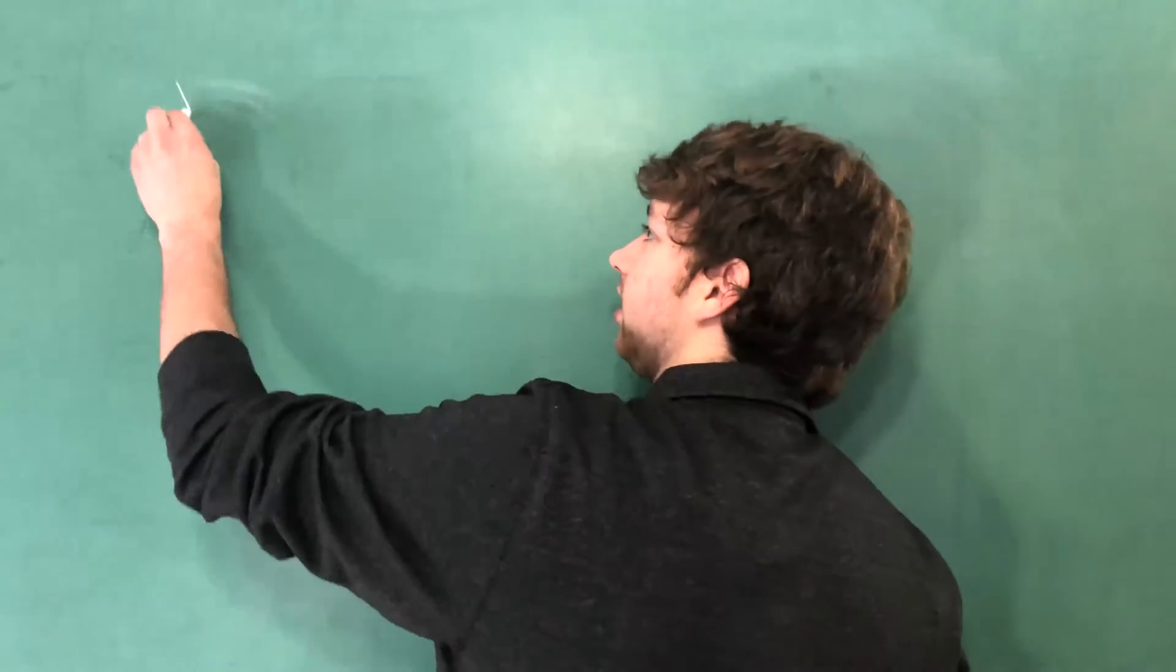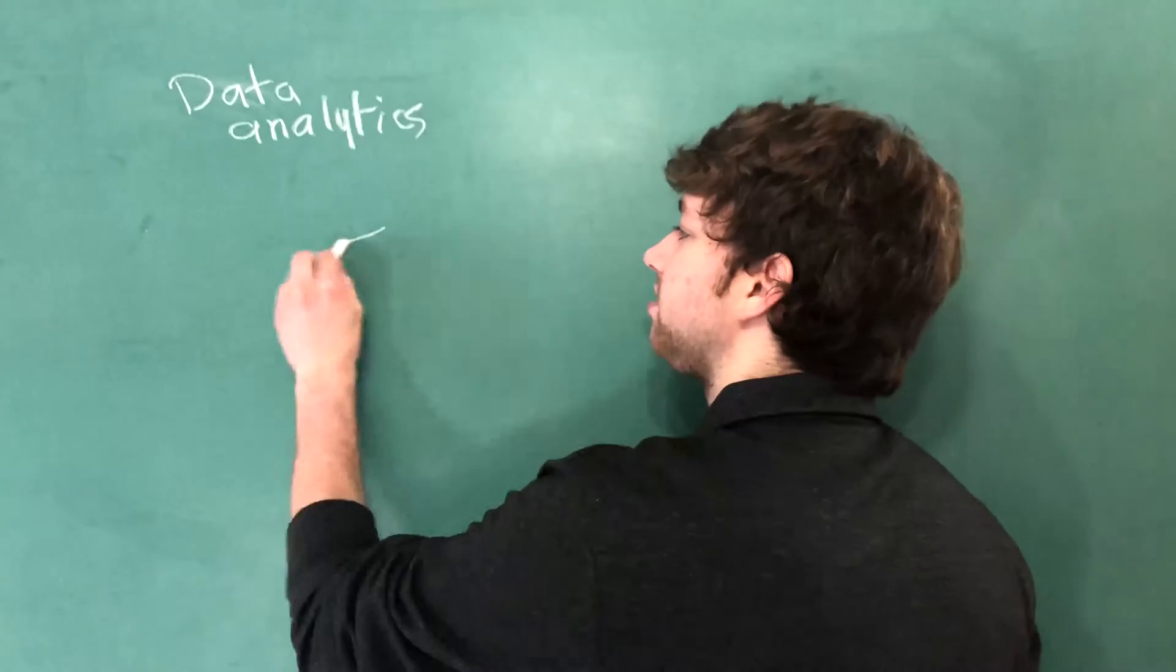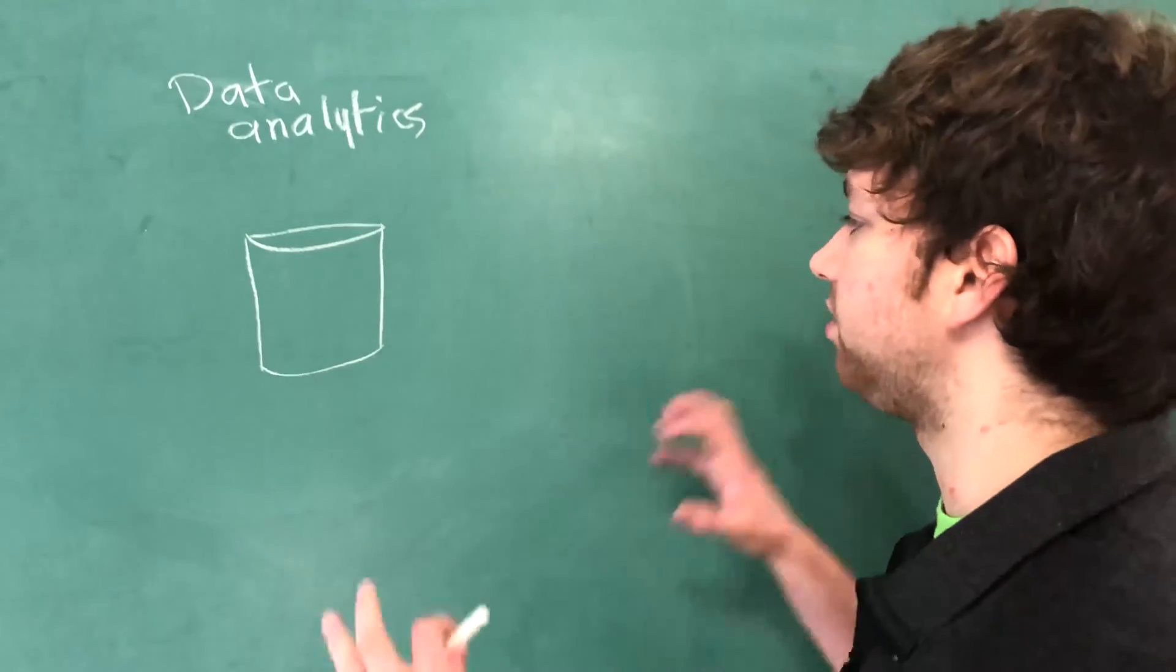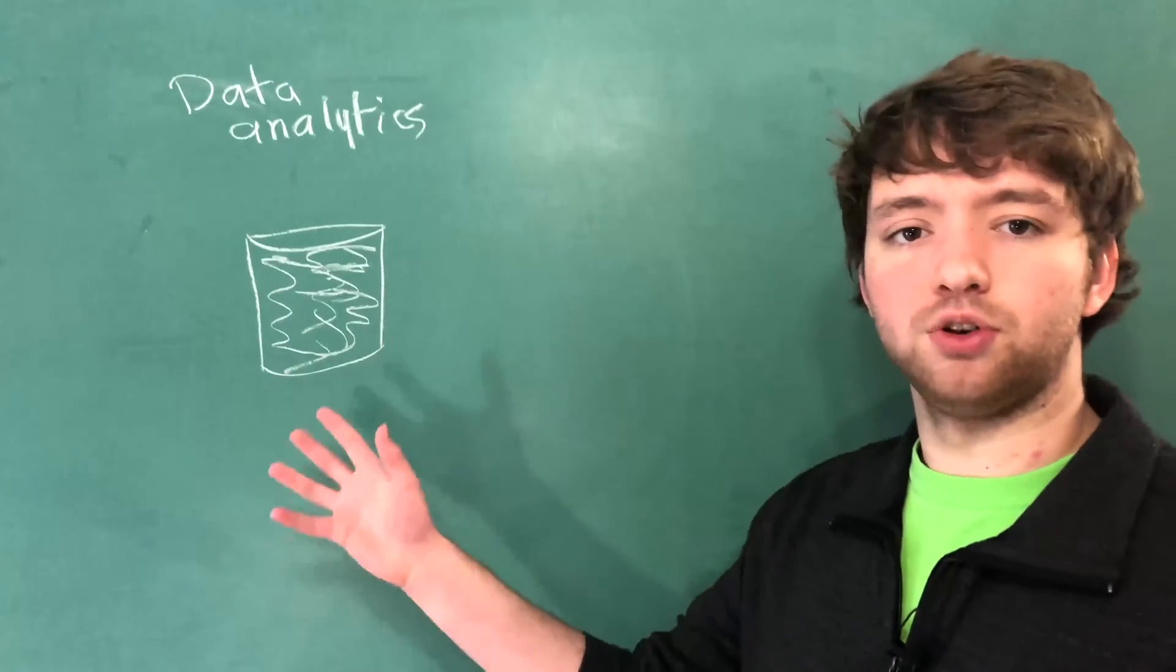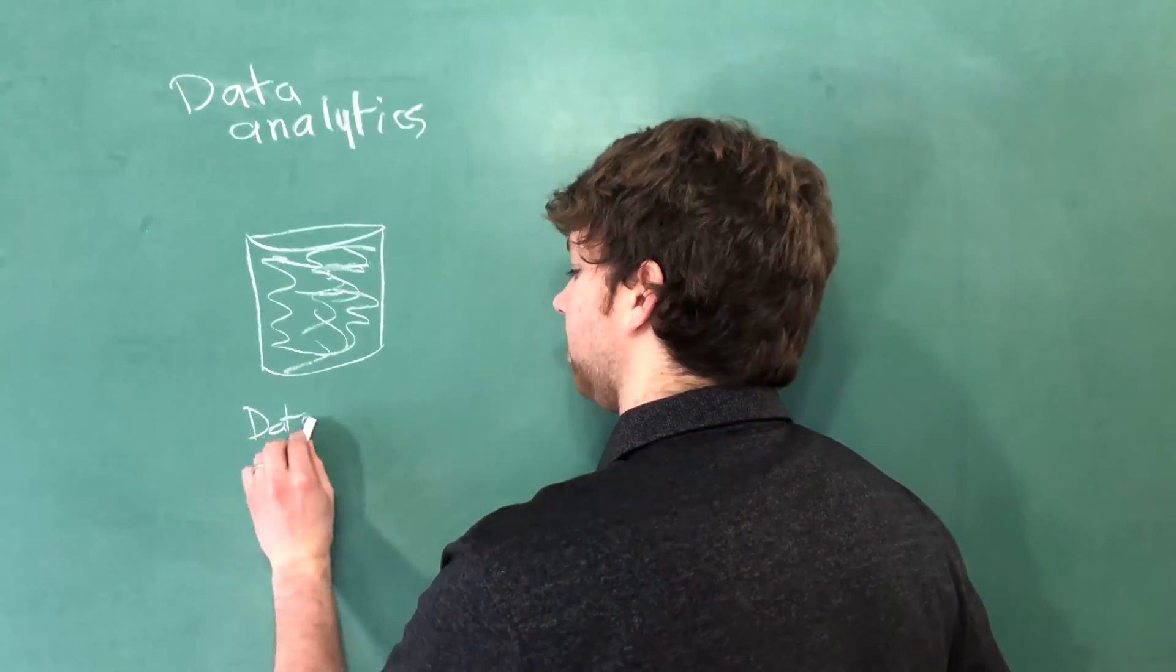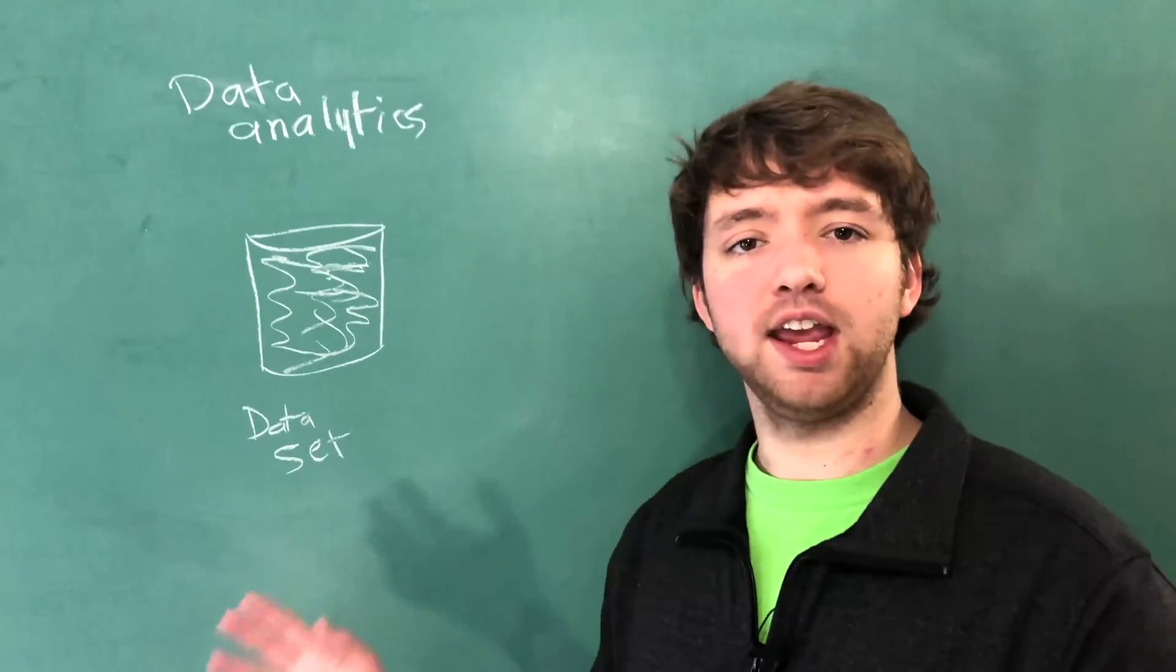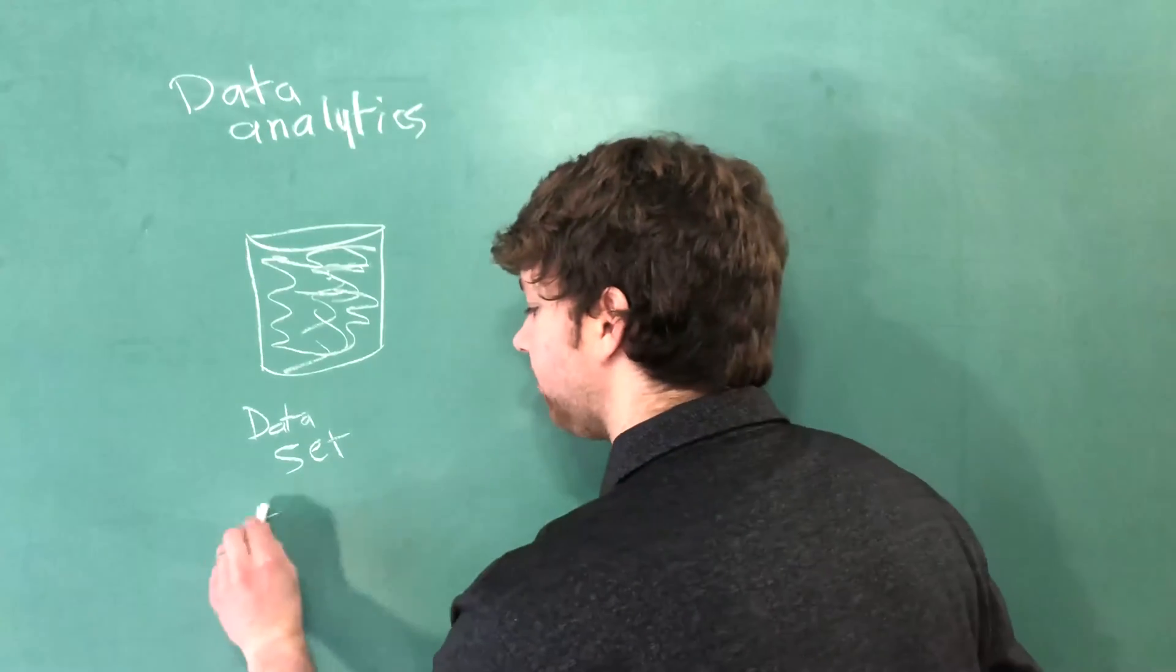So data analytics looks at data and I drew this image in the previous video which just kind of represents a database or a data source of some sort, and just imagine having tons of data in here. This is known as our data set. The data set contains a lot of historical data. Now that's kind of a key here.